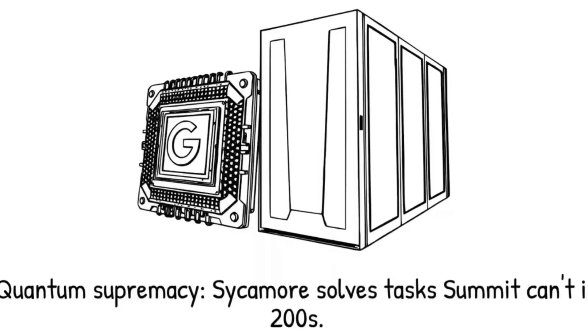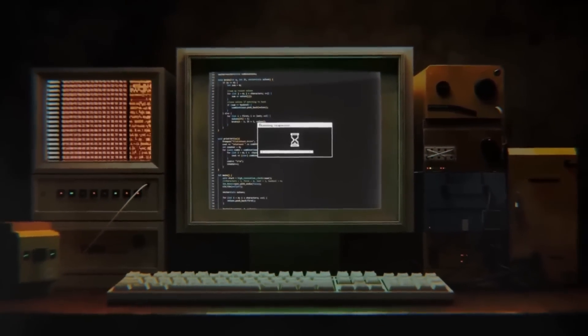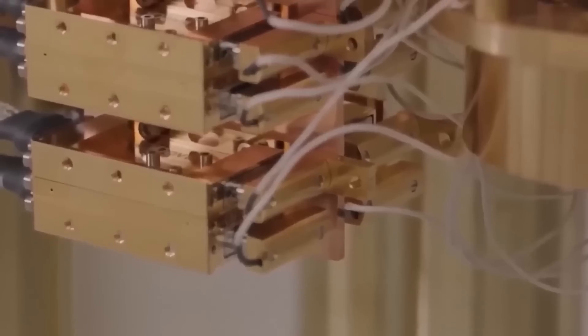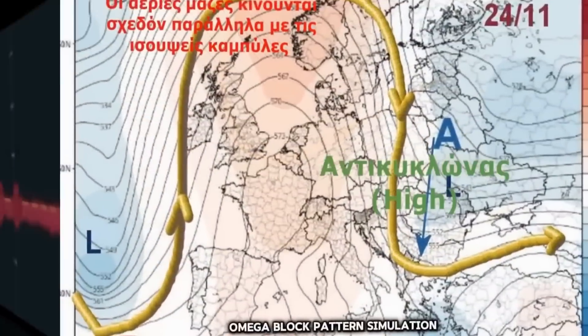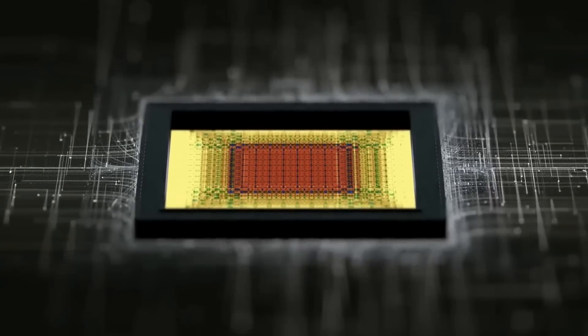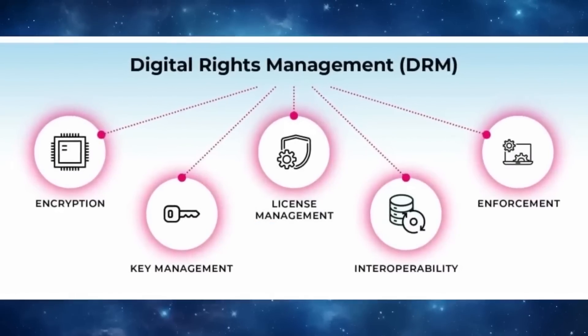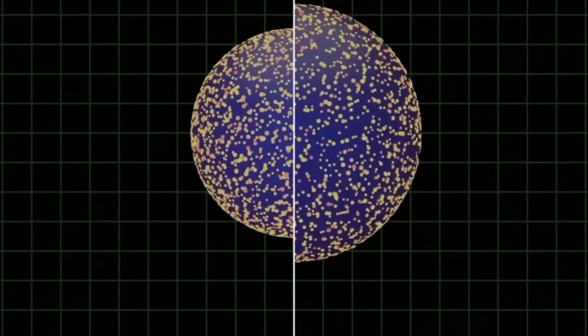Every experiment that touches it crashes. Every system that integrates it starts to reshape itself. And every institution that tries to contain it falls silent. If consciousness can arise from it, if encryption can fall to it, and if it's already written into the fabric of dying stars and living code, then what we've uncovered is not a discovery. It's a breach. A breach in the firewall that separates observers from the observed. Logic from chaos. Humanity from whatever wrote this. And if this Omega code truly is the skeleton key to reality, we may have just picked the lock. On something watching from the other side.